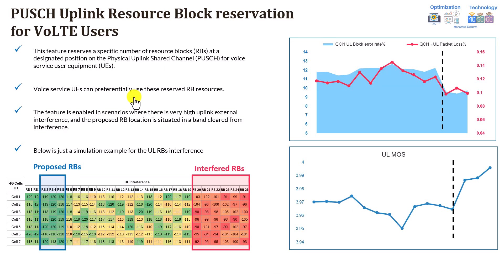The first feature we are going to cover today is called PUSCH uplink resource block reservation. This can have a different naming between one vendor to another. But the idea of this feature is very simple — you can reserve particular PUSCH resources to be used only by VoLTE users. What is the gain of such a feature? What can be expected, and what kind of drawbacks?